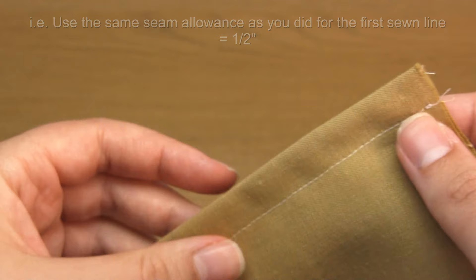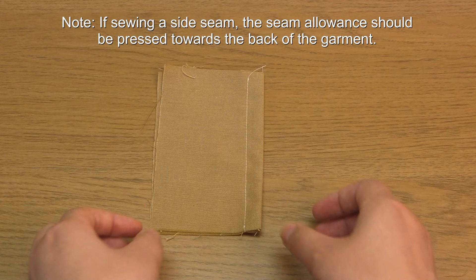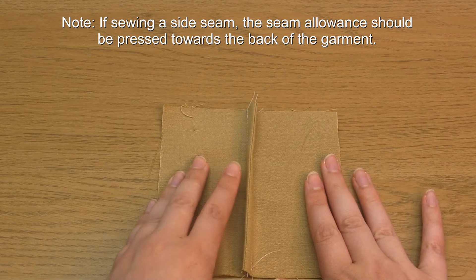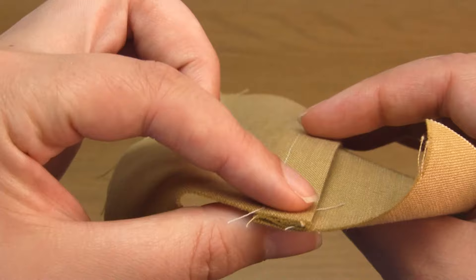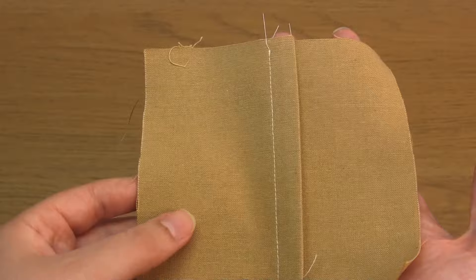Then open the fabric out again and press the seam allowance to one side. And that's it, the French seam is now complete. This is a half inch seam and in order to make it we used one inch of fabric. So in other words, in order to make this exact same seam, you would need to add one inch of seam allowance to both fabric pieces.